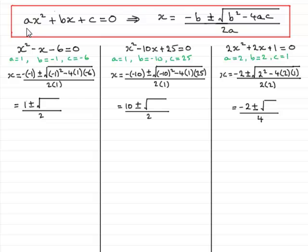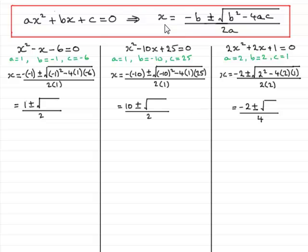I'm assuming that you're familiar with the quadratic equation ax squared plus bx plus c equals 0. And if you've got a quadratic equation in this form, you can find what x is by using the quadratic formula: minus b plus or minus square root of b squared minus 4ac, all divided by 2a. What I want to show you in this tutorial is how b squared minus 4ac, often called the discriminant, affects the number of solutions that we get. The solutions x are often called roots, the roots of the equation.